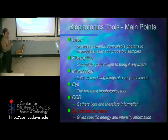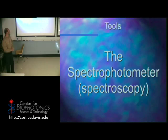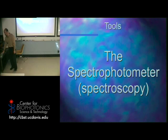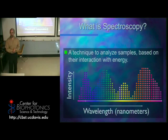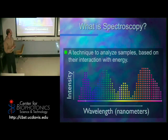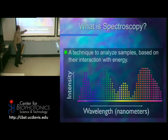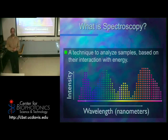Now we're going to talk about the spectrophotometer, which can give you specific energy and intensity information. Spectroscopy is the art or science of what you're doing — it's really a way to analyze a sample based on how it interacts with energy. In our case, we have it interact with light. We figure out something about that interaction, and that gives us a spectrum telling us the wavelength used and how much was absorbed, reflected, diffracted, or refracted. It's usually wavelength versus some kind of intensity.